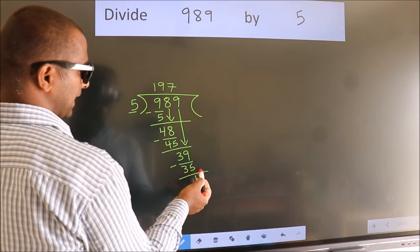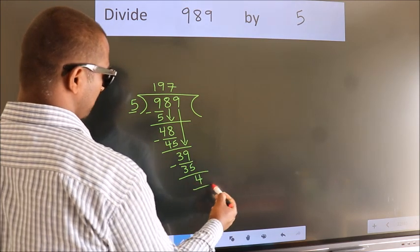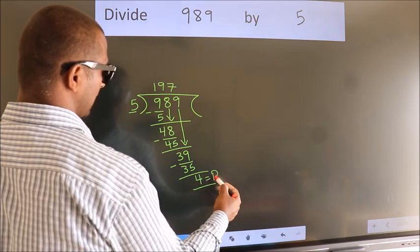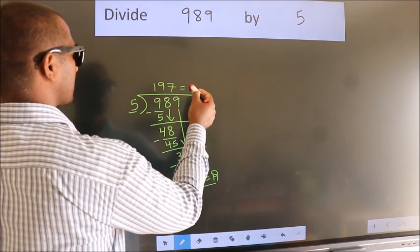No more numbers to bring it down. So we stop here. This is our remainder. This is our quotient.